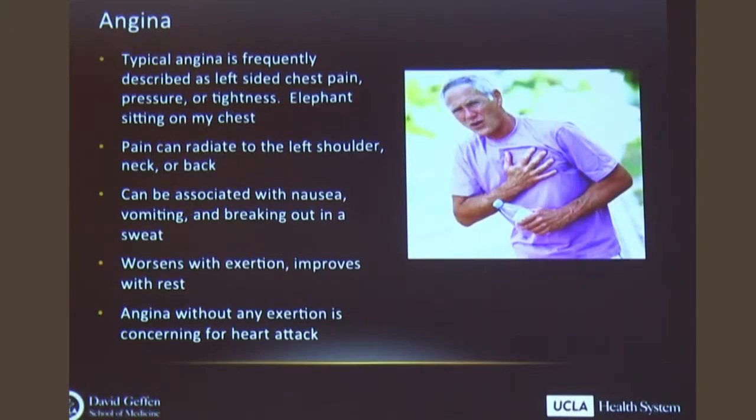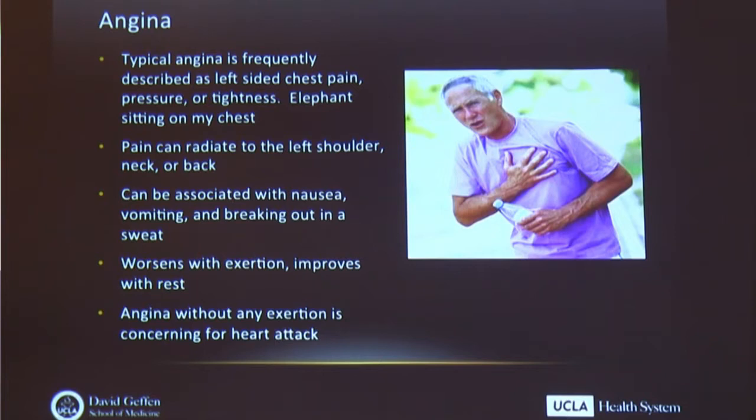Patients with coronary artery blockages often present with angina — a term used to describe chest pain. Typical angina is described as left-sided chest pain, pressure or tightness. Sometimes people feel like there's an elephant sitting on their chest. The pain can radiate to the left shoulder, the jaw, or sometimes to the back. It can be associated with nausea, vomiting, and breaking out in a cold sweat. It's often worse with exertion and improves at rest. Angina at rest, without exertion, is very concerning for a heart attack.